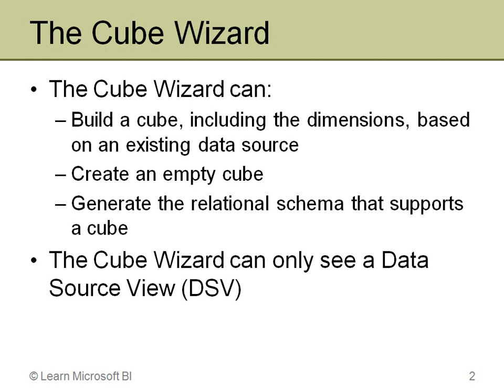The second option is simply to create an empty cube. The third option is very similar to the 2005 option — it will actually let you create a cube, define the cube structure, the measures, the dimensions, and then it will generate a relational schema back in the underlying data source, as long as you have permissions. Just like in 2005, the 2008 Cube Wizard can only see a data source view, not the underlying data sources, so you must set up the data source view and have it working properly.